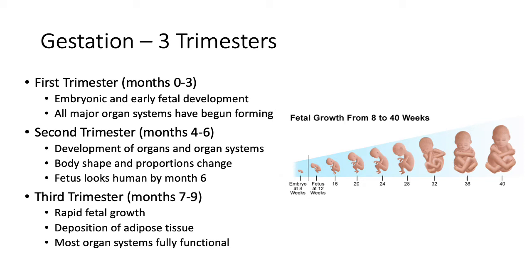In the second trimester, months four through six, we see further development of organs and organ systems, and body shape and proportions start to change. By month six, the fetus starts to look like a little human. In the third trimester, months seven through nine, most organ systems are fully functional. The fetus is primarily packing on fat tissue — adipose tissue — so that when born at 40 weeks, the baby can regulate its own body temperature.